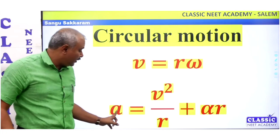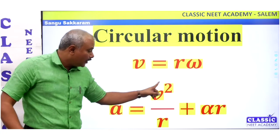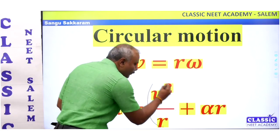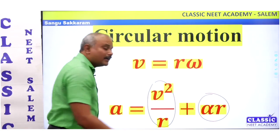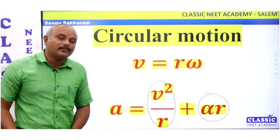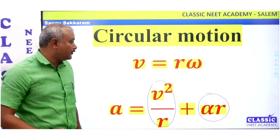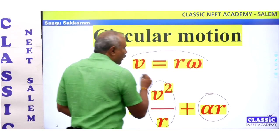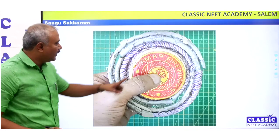Then the angular velocity is still. This is the acceleration — this is the centripetal acceleration. If you look at this, you will say the tangential acceleration. Then there are two accelerations. Generally, we will see.